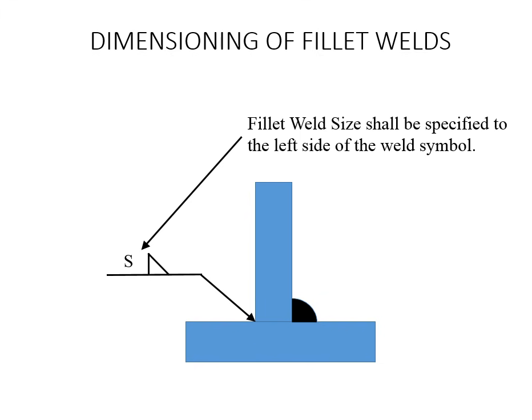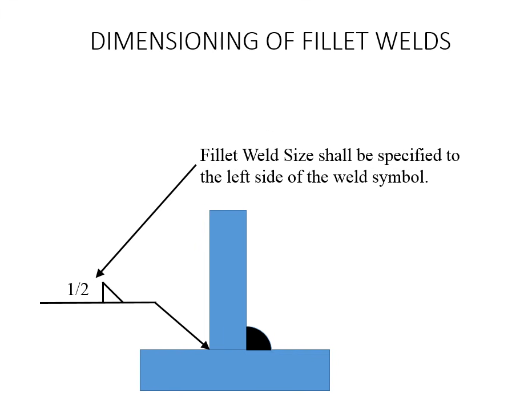Dimensioning of fillet welds: fillet weld size shall be specified to the left side of the weld symbol. Here we've put in a fillet weld with a generic 'S' — it's above the reference line so it's for the other side. Replacing the generic S with an actual number, say half inch, means you're putting a half inch fillet on the other side — the opposite side of the arrow, not the arrow side.